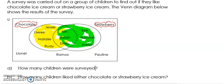So let's 1, 2, 3, 4, 5, 6, 7, 8, 9, 10, 11, 12, 13. So how many children were surveyed? We know that the answer is 13. All right, let's look at the next question.